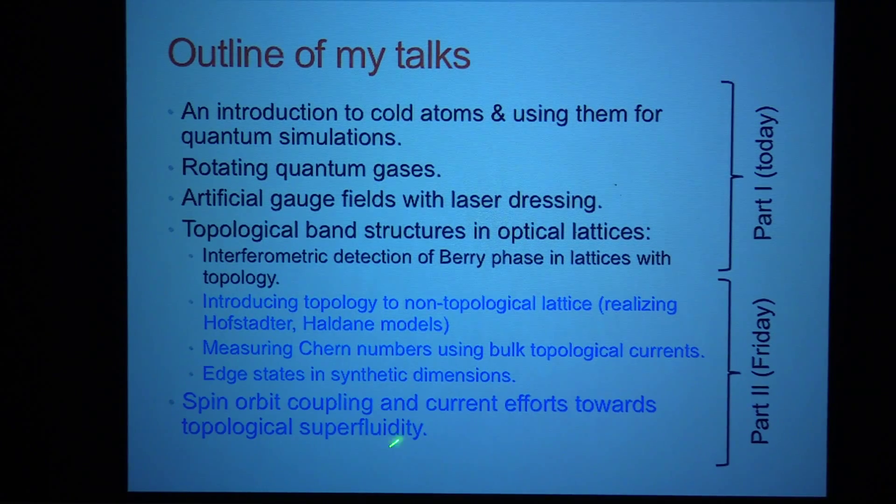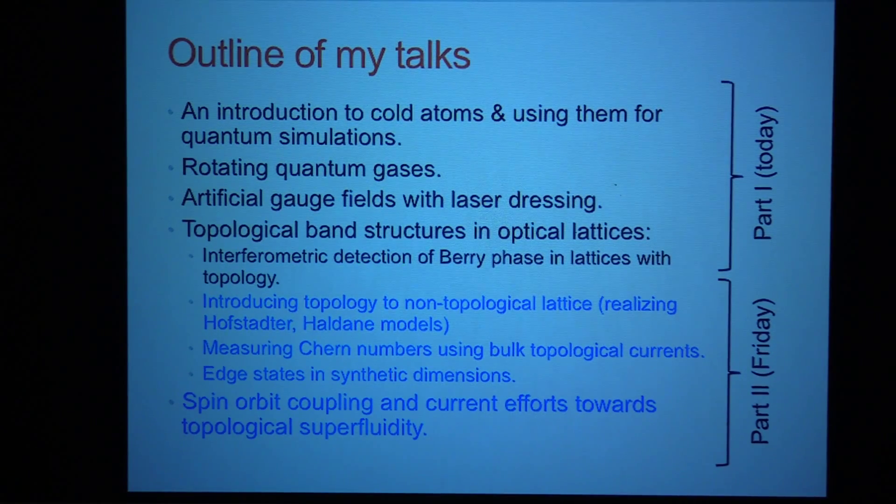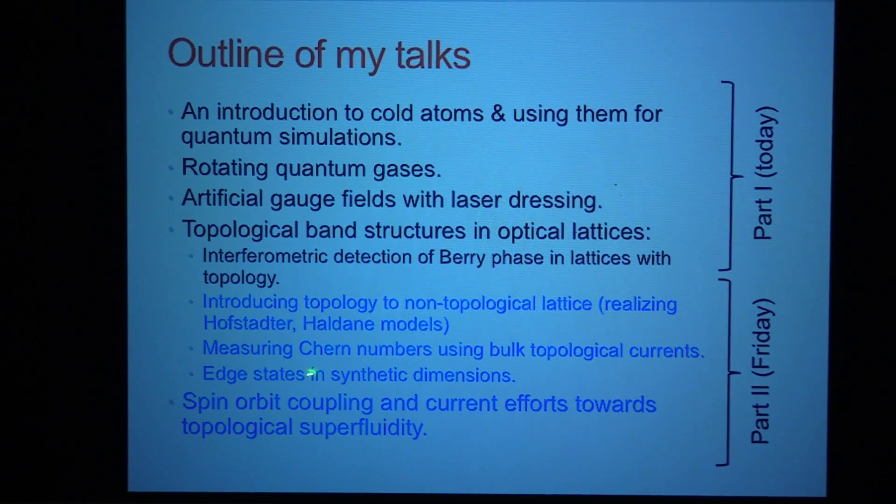And then on Friday, what I'll do is I'll show you how to start with lattices that do not have any associated topology, but then to add topology to them and tell you about experiments that have realized very fundamental models like the Hofstadter model or the Haldane model using these ideas and how they measured in these experiments, Chern numbers using both topological currents and some very recent stuff on edge states.